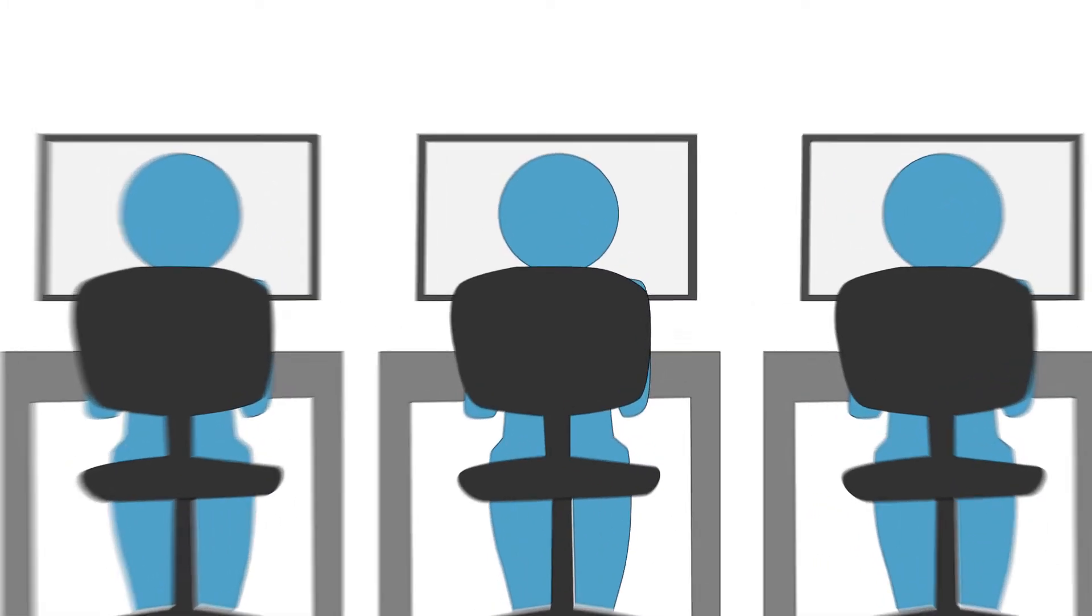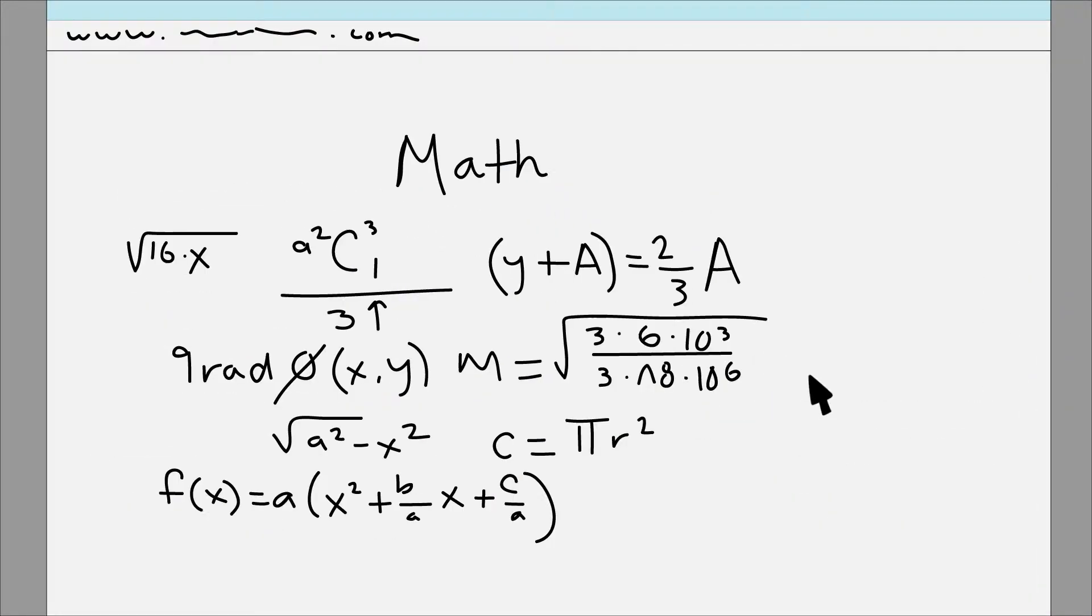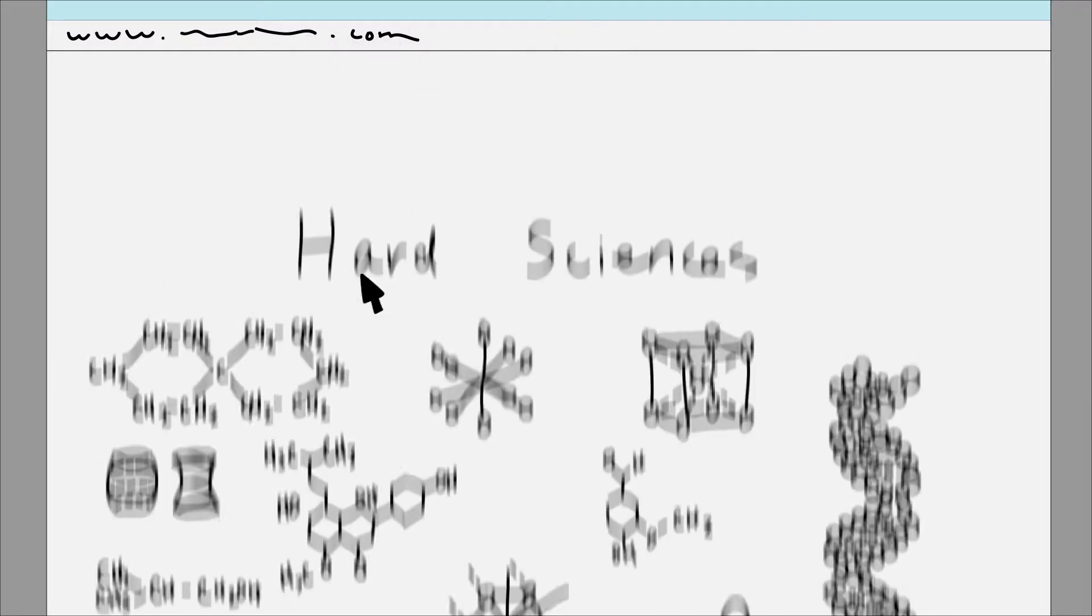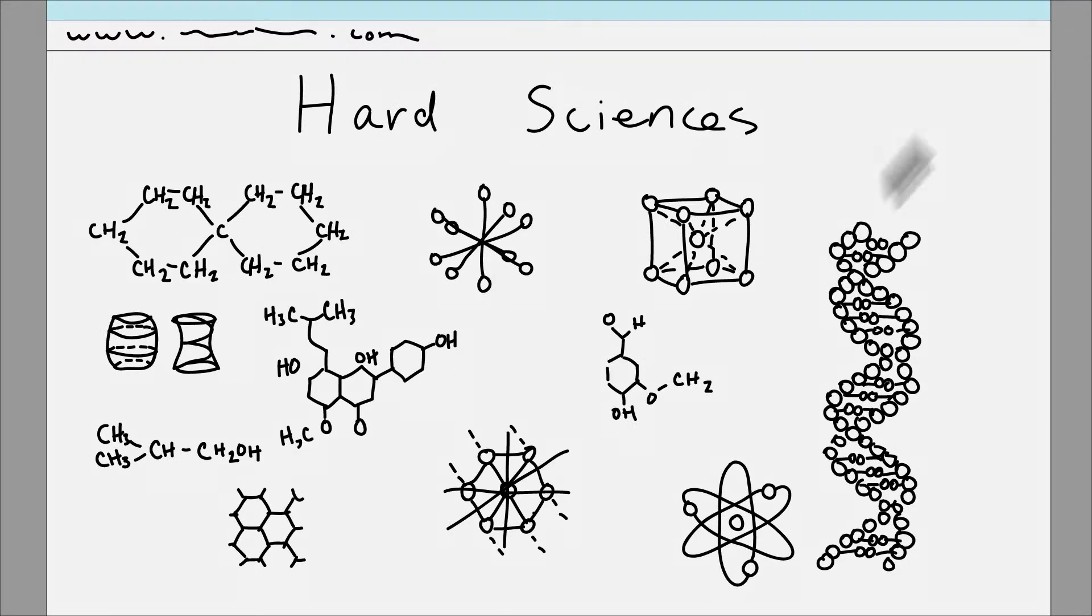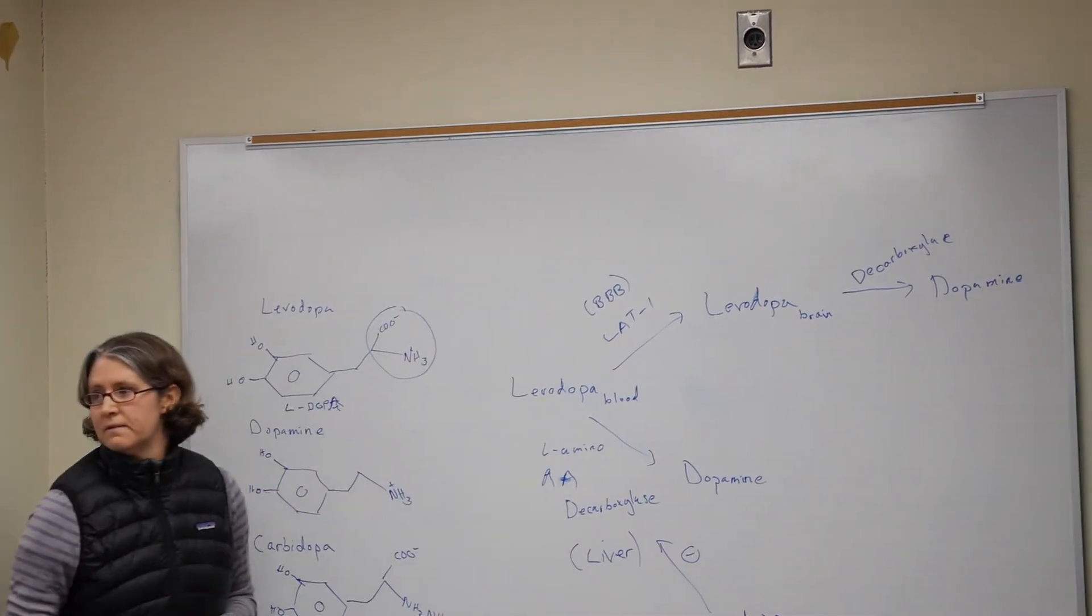Another option in this track is computer science. Computer science students develop skills through interactive classes and research projects. Coursework extends past mathematics and includes the hard sciences. Computer science incorporates all aspects of life, from communication to medicine.